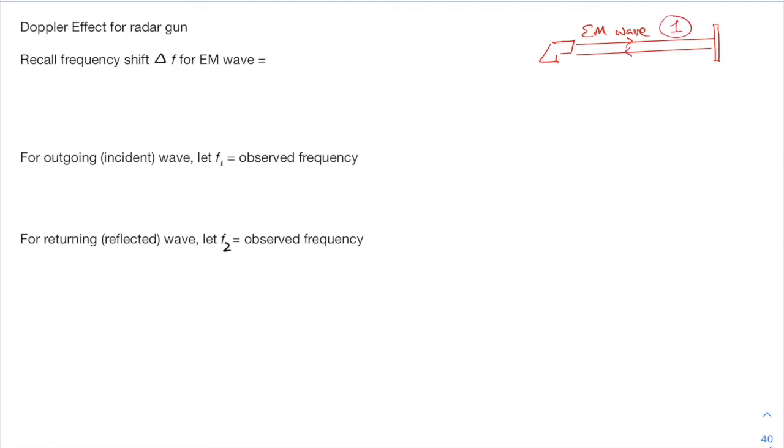Let's call the incident wave as wave 1 and the reflected wave as wave 2. Notice that for this target, it serves both as an observer for wave 1 as well as a source for wave 2. What does that mean? It means that the observed frequency that came from wave 1 now becomes the source frequency for wave 2.